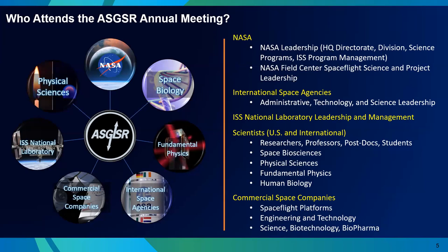One important thing to understand is who attends the ASGSR meeting. It's a huge, diverse population. You have NASA in all its different capacities, international space agencies representatives, ISS scientists, the ISS National Laboratory leadership and management, scientists, commercial space companies working on platforms, engineering technology, as well as science, biotech, and biopharma. It's a large community that makes up space science, space research, and space exploration — you're going to see and meet a lot of different people.